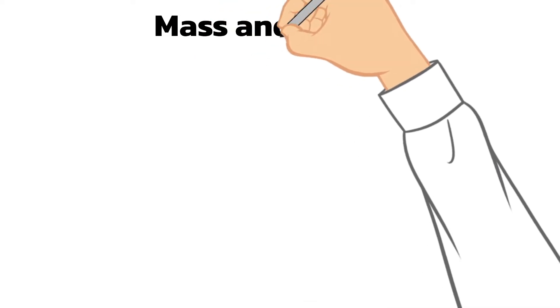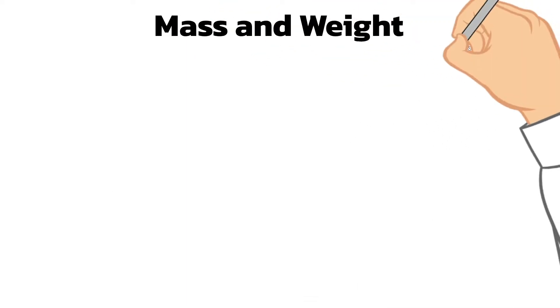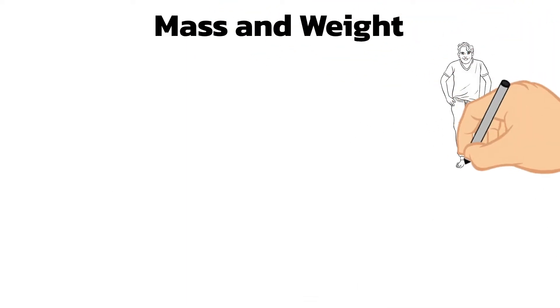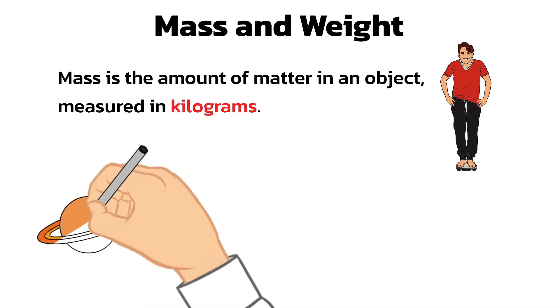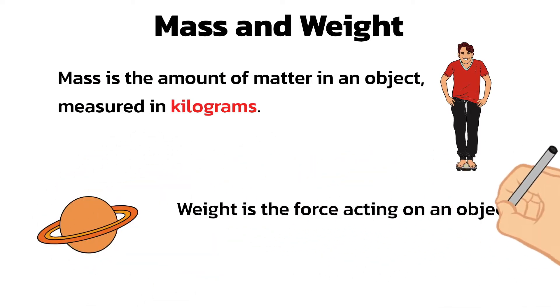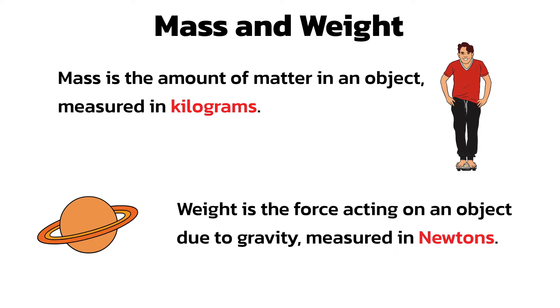First of all you should remember that in everyday life we use the words mass and weight to mean the same thing. However, in physics, there's an important difference between them. Mass is the amount of matter in an object, measured in kilograms. Weight is the force acting on an object due to gravity, measured in newtons.